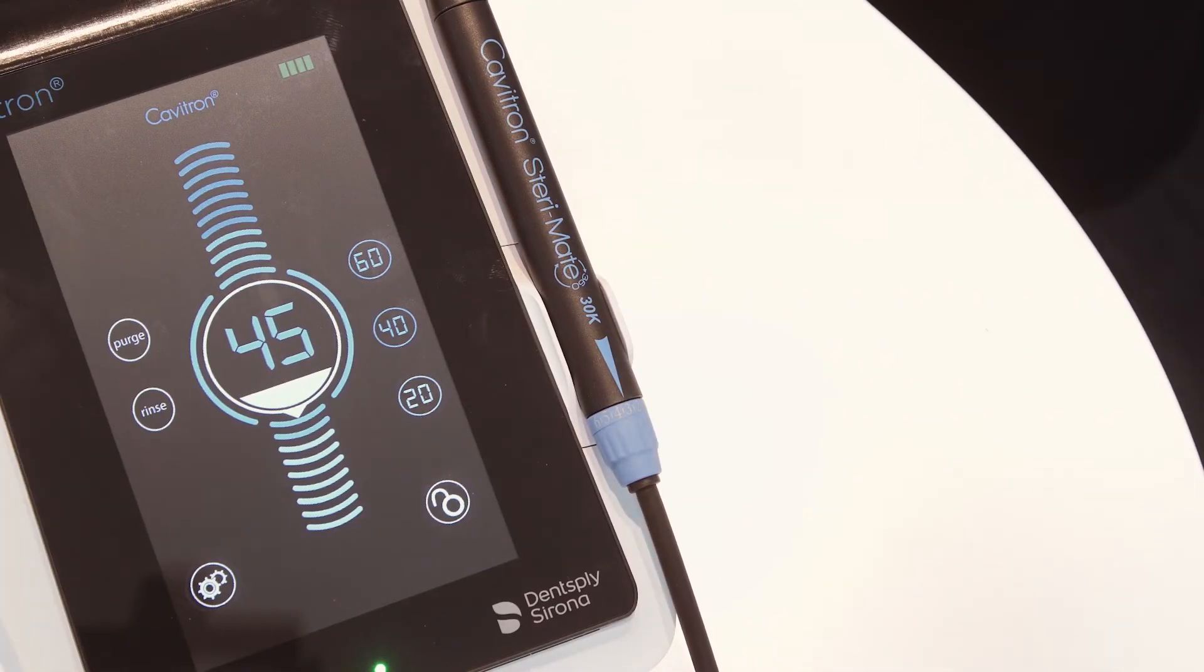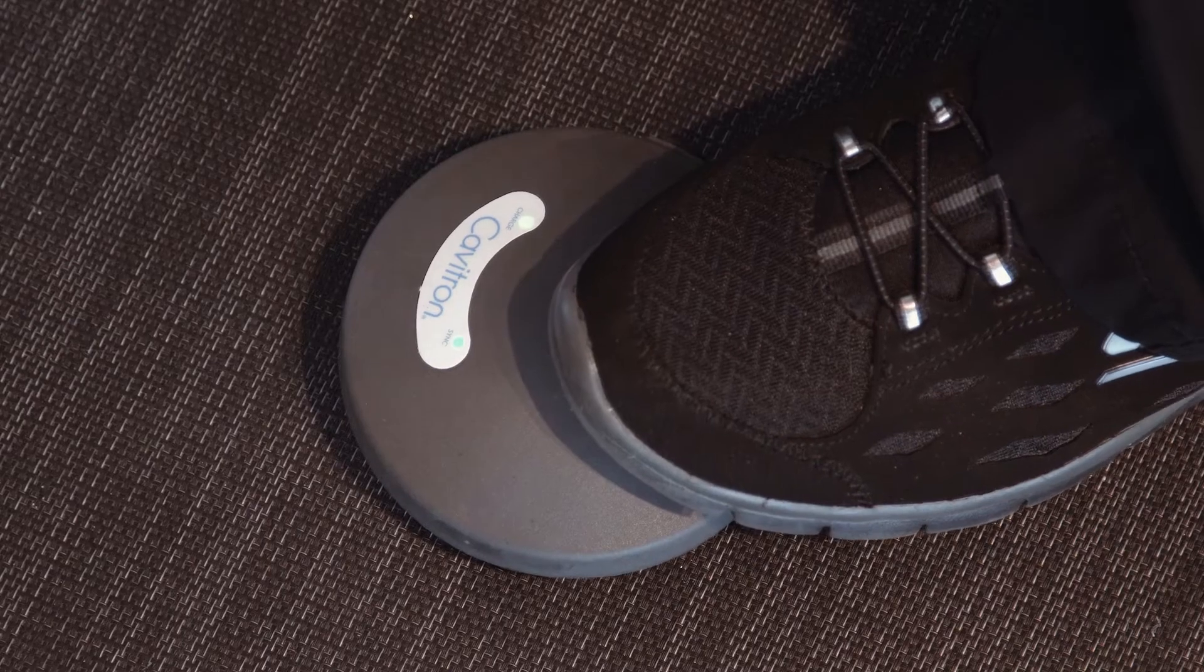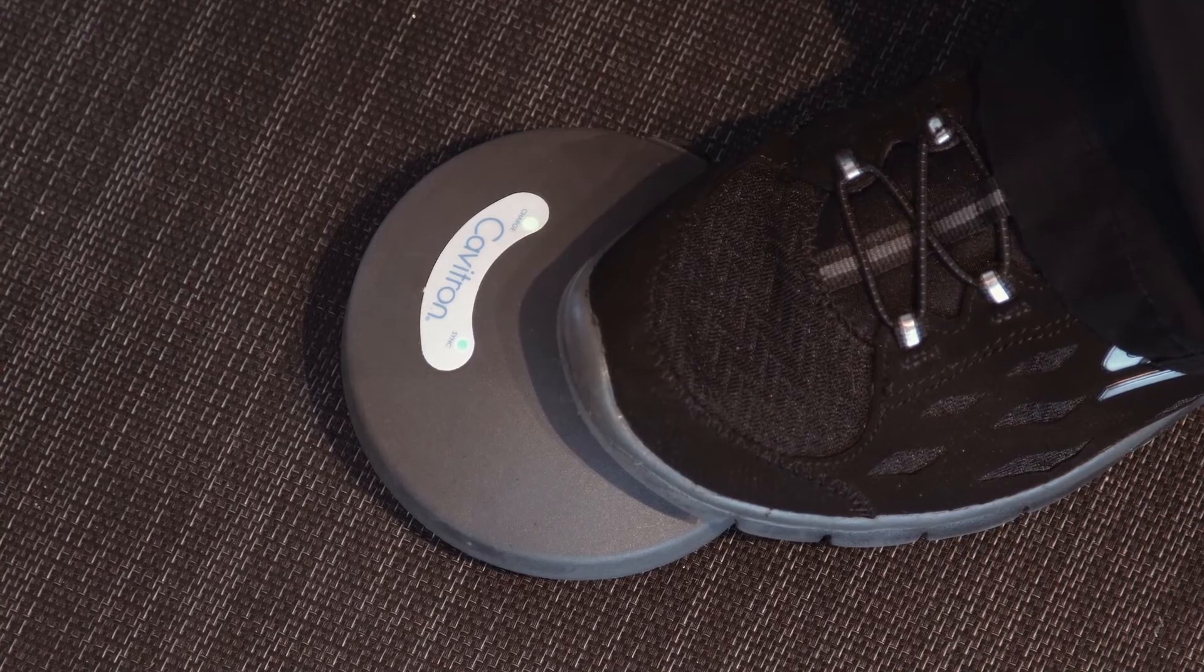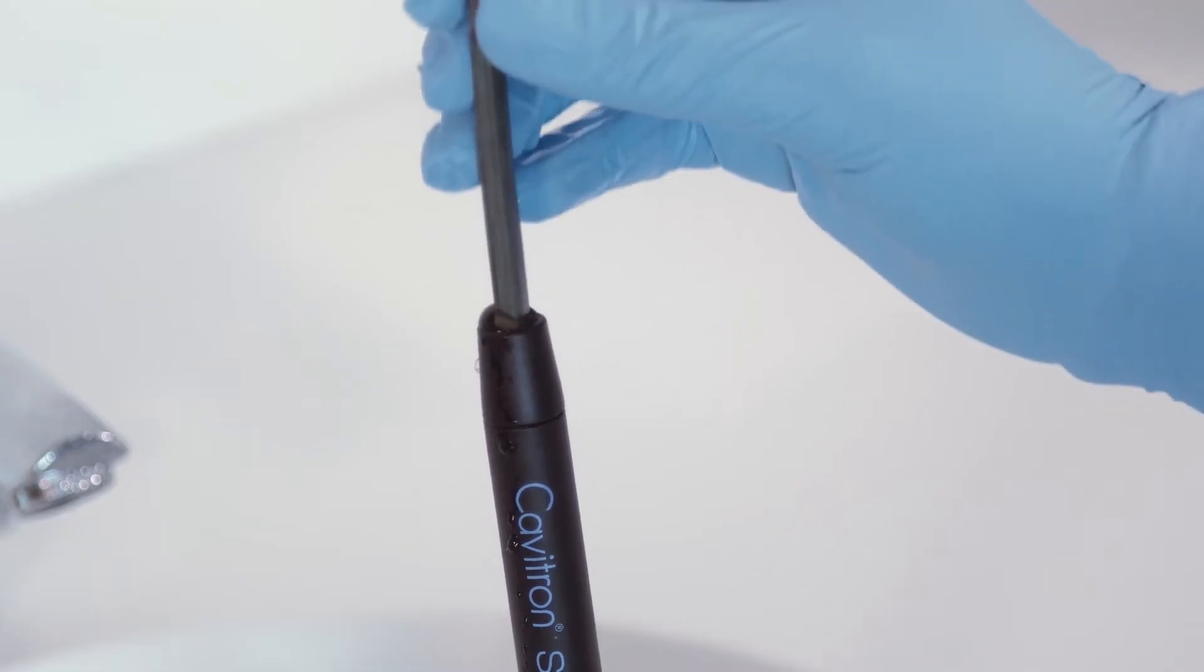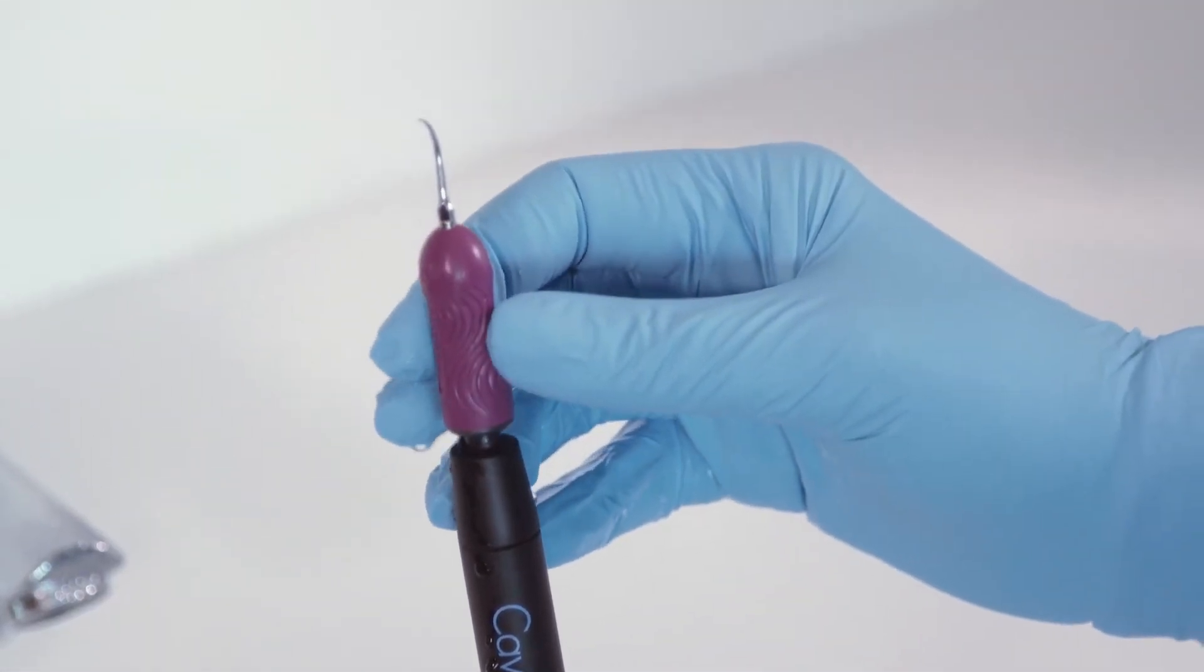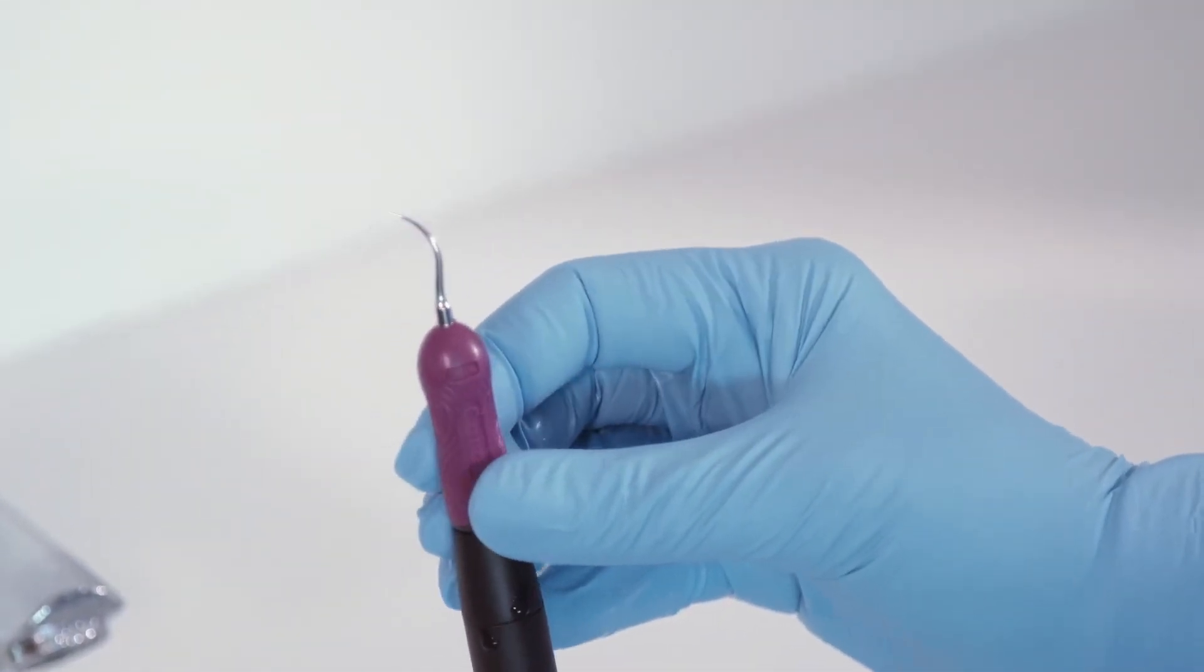Once the cord and handpiece are connected, depress the foot pedal until water exits to release any air bubbles that might be trapped inside the handpiece. In order to fully seat the insert, push with a gentle twisting motion. Do not force it.